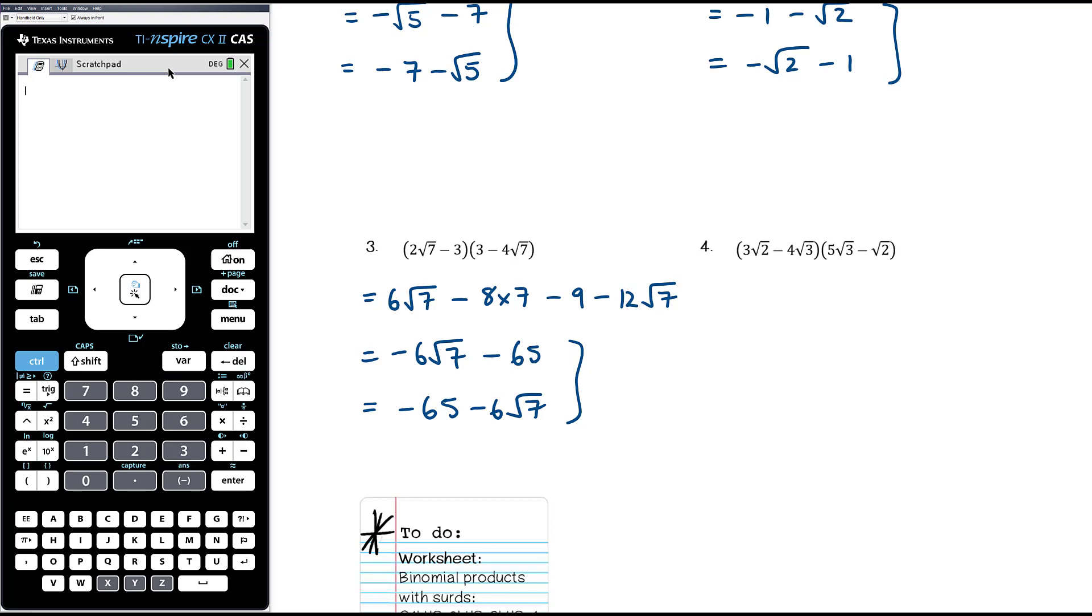Okay, and then question 4, 3 root 2, so just one at a time again. 3 root 2 times 5 root 3, so 3 times 5 is 15, root 2 times root 3 is root 6. 3 root 2 times negative root 2, so it's going to be positive times negative, so it'll be minus. 3 times 1 is just 3, root 2 times root 2 is 2.